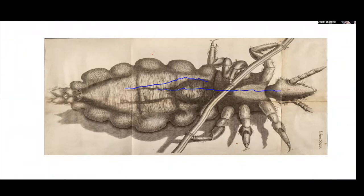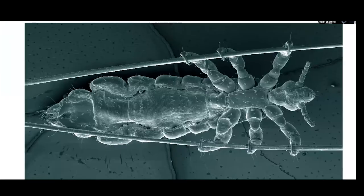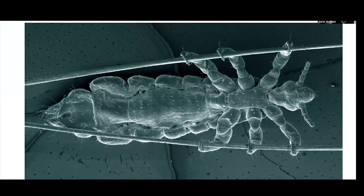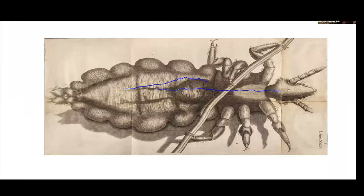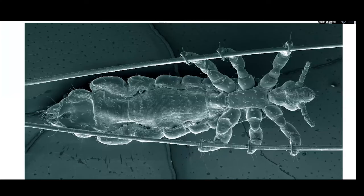Just for the fun of it, I opened up a book of modern microscopy where somebody posted a scanning electron micrograph of a louse, obviously posed to look pretty much like the one that Hooke described 350 years earlier. Look at the differences between this and that, which really quite amazed me.